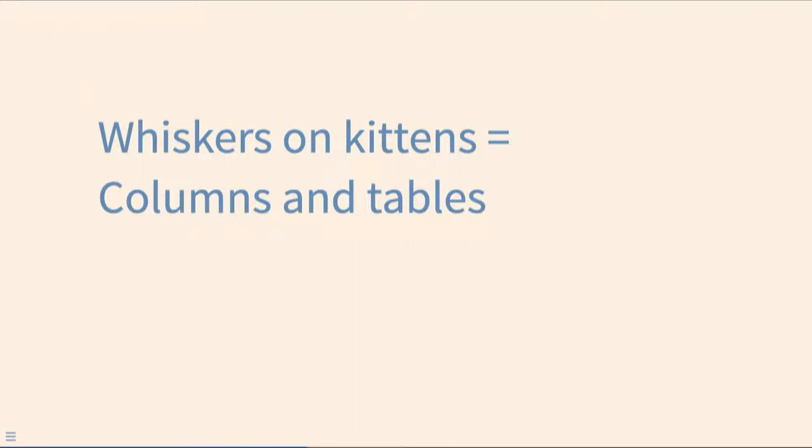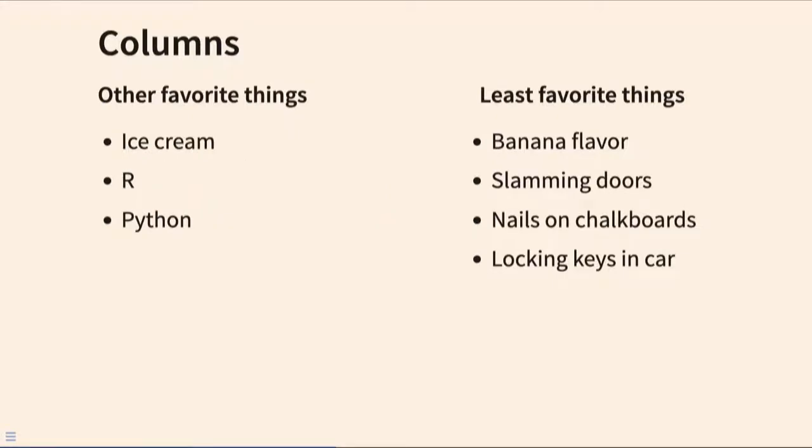All right. Whiskers on kittens. Kittens are one of my favorites. But one of my other favorites is columns and tables. So again, when you're thinking about how to construct your slides, how you lay things out is really important. So if I'm thinking, oh, what are some of my other favorite things besides Quarto? Ice cream is top of the list. R and Python. I do like both. I'm so excited about Posit. Least favorite things, banana flavor. Fine as a banana, not a good flavor in anything else. I know people have different opinions. Slamming doors, nails on chalkboards, locking keys in the car to refer to Julia and Max's. I have done that. I still fear it, actually.